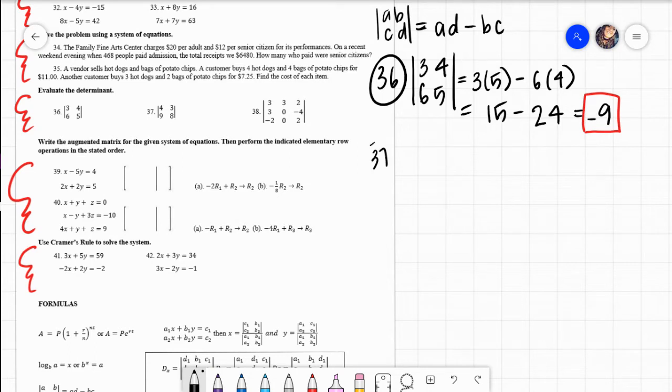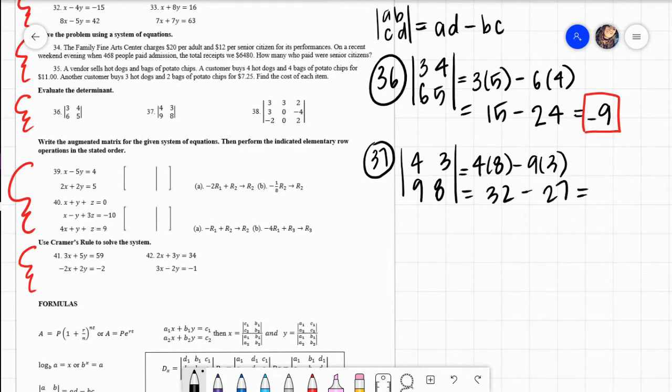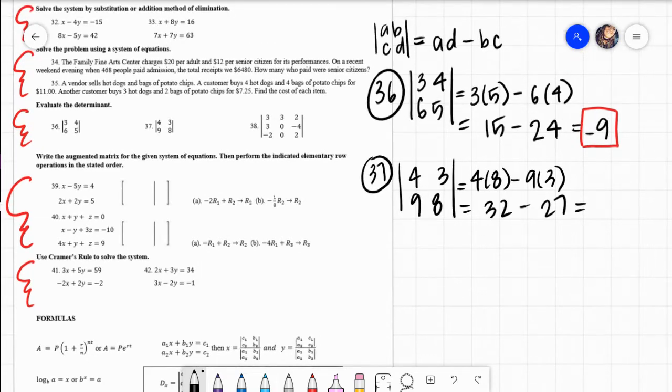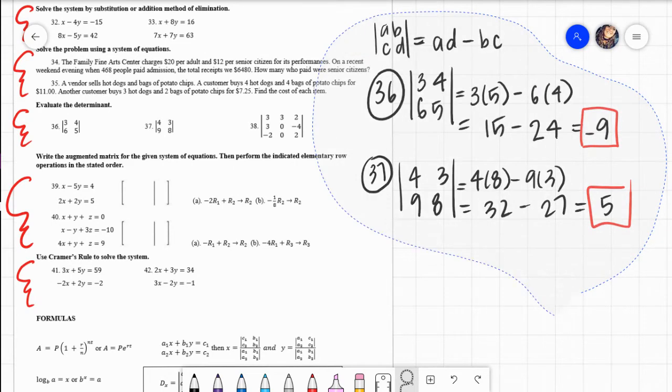Okay, so problem 37. It's finding the determinant of 4, 3, 9, 8. You do 4 times 8. Subtract from that 9 times 3. 4 times 8 is 32. Signs are the same, so it's positive. 9 times 3 is 27. Signs are different, so it's negative. And then if you do that subtraction right there, you get a positive 5. So that's it. That's going to be the determinant of number 36 and 37.